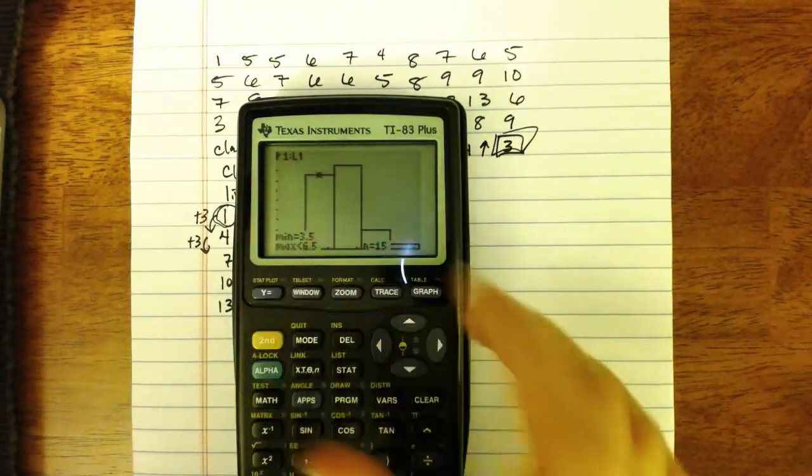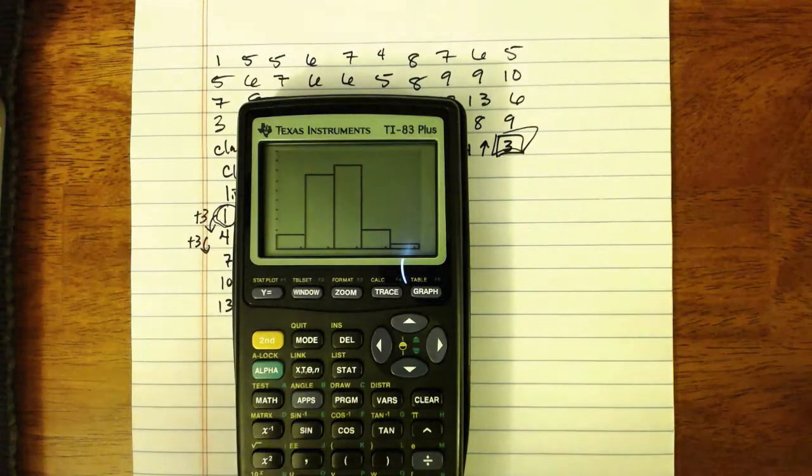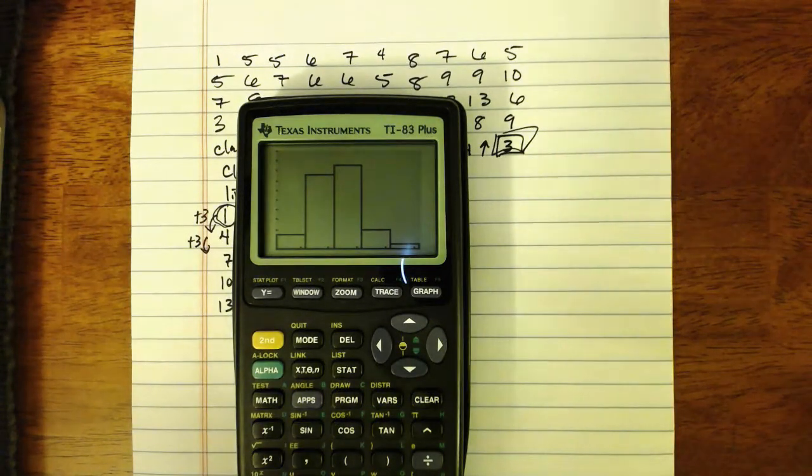If you want to clear all that information from your screen, you can just press graph again. And that's how to create a histogram on your calculator.